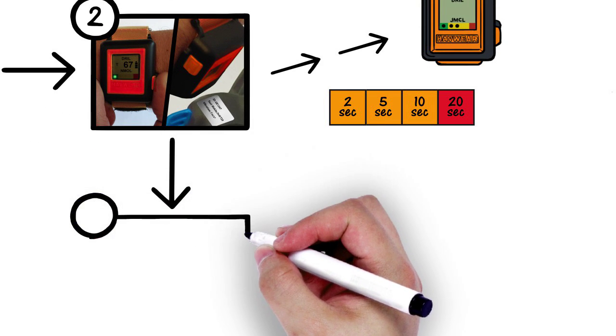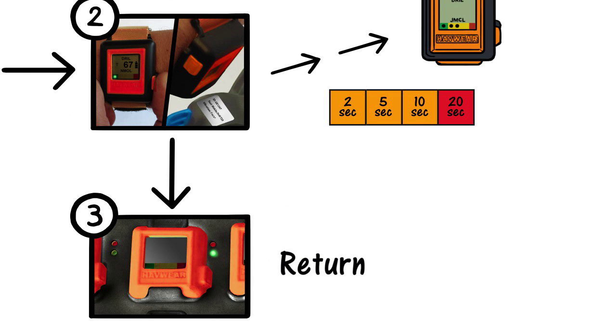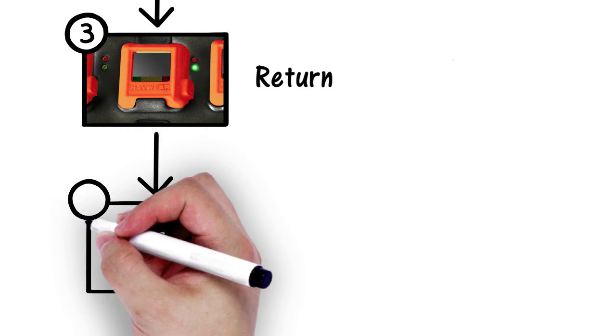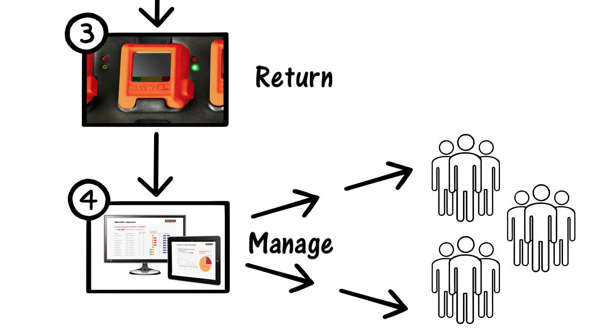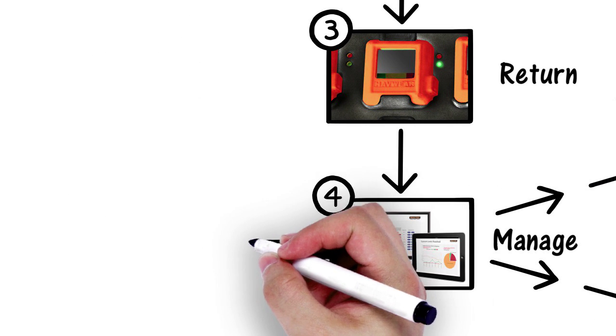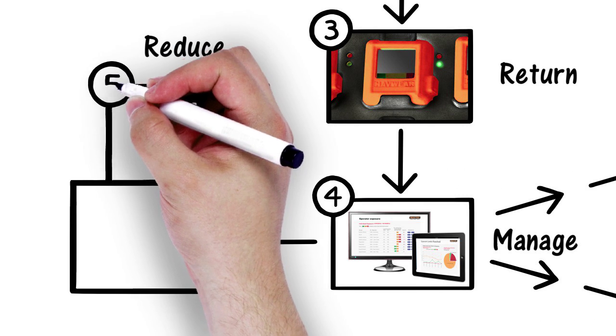At the end of a shift, the operator returns the Havware to a docking station to recharge and transmit data. Securely hosted by Reactech, companies can centrally manage employee access to specific reports, view reports online or by email, and create manager alerts if operators exceed exposure thresholds.